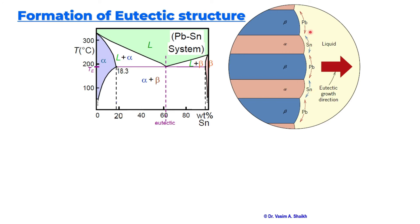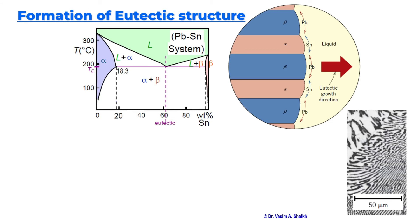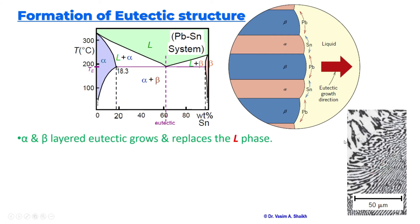The lead will go into the alpha phase and the tin will go into the beta phase. The actual image will look like this — you can see the lamellar layer, meaning one layer upon another of lead and tin. Alpha and beta layered eutectic grows and replaces the liquid phase, so the liquid phase is replaced by the alpha and beta layered structure.